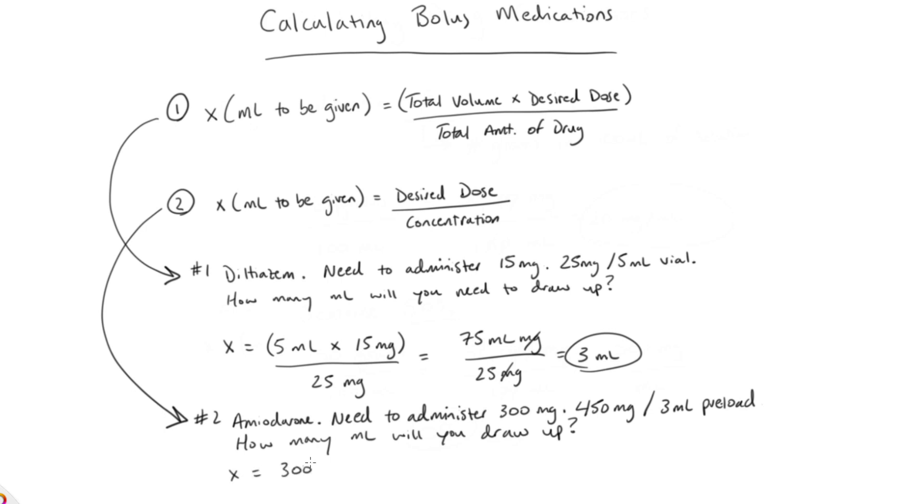So the second formula is going to be better here, since we're given concentration and the desired dose. So we're going to look at x equaling 300 milligrams divided by the concentration, which is 450 milligrams inside 3 mLs.